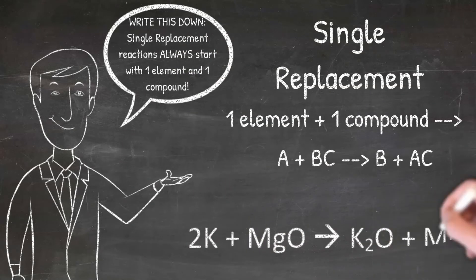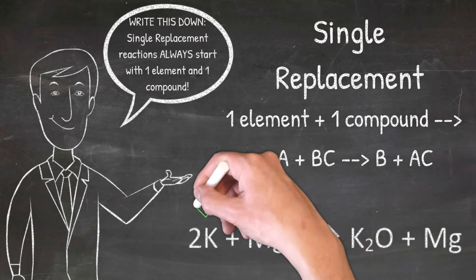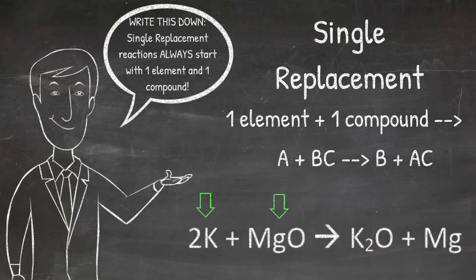The important thing to notice about single replacement reactions is that it starts with one element and one compound. You can see from the example that the reaction starts with one element K and one compound MgO. Whenever you have one element and one compound as reactants, you have a single replacement reaction.